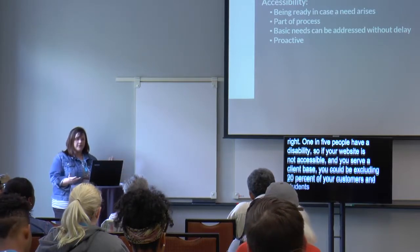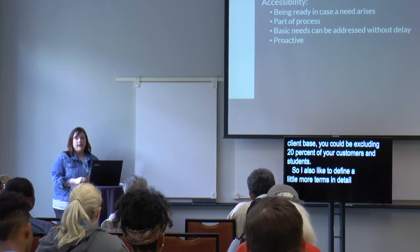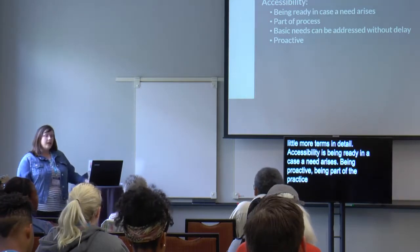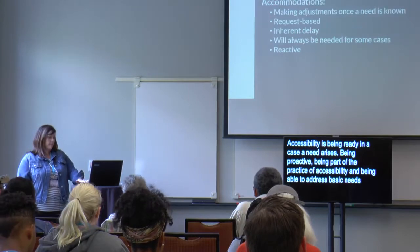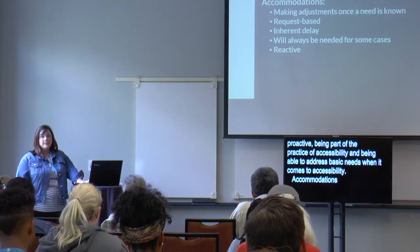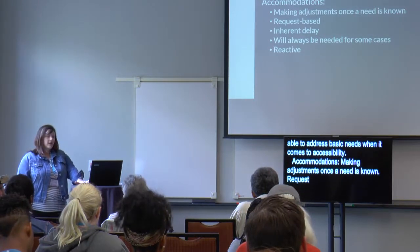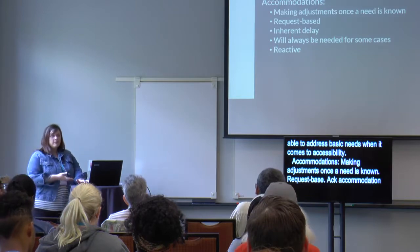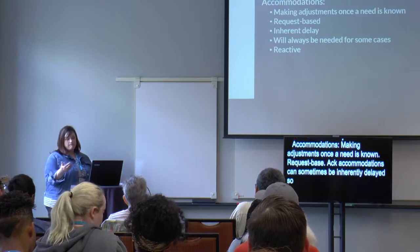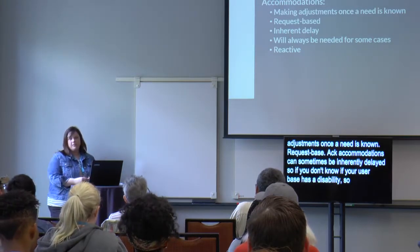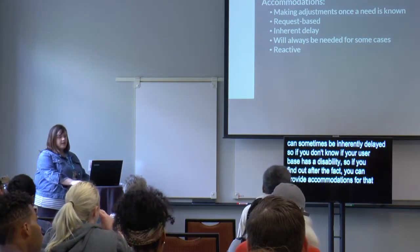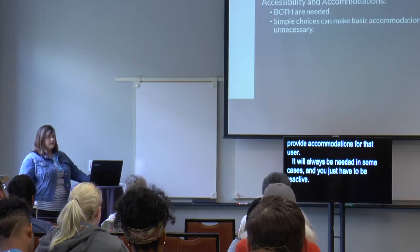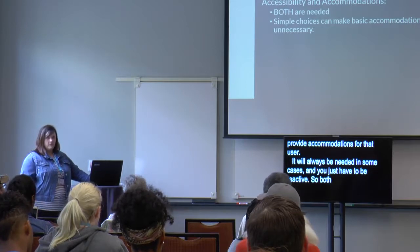I also like to define terms in more detail. Accessibility is being ready in case a need arises — being proactive, being part of the process, and being able to address basic needs. Accommodations are making adjustments once a need is known; they're request-based and can sometimes be inherently delayed because you don't know what disability your user may have. Both are needed. Simple choices can make basic accommodations unnecessary when reviewing your site.